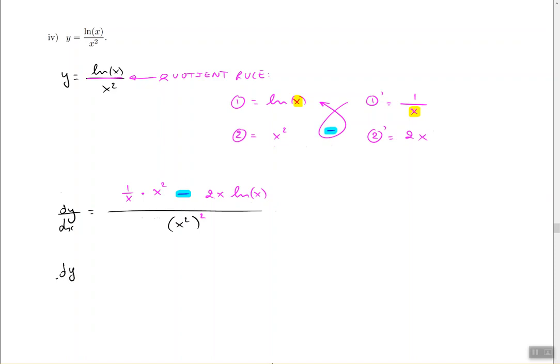So I'm going to go dy over dx, and one over x times x squared together—that's just going to be x—minus 2x ln of x, all divided by x squared squared, which is going to be x to the power of four.